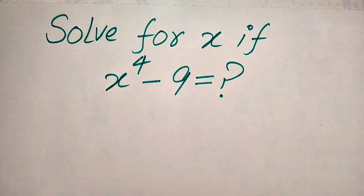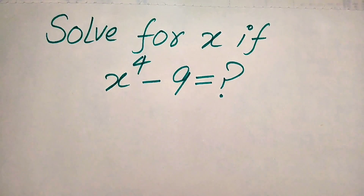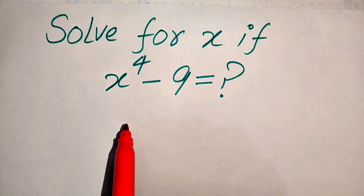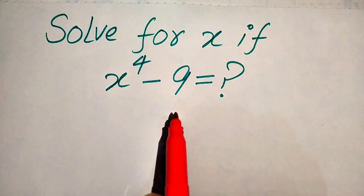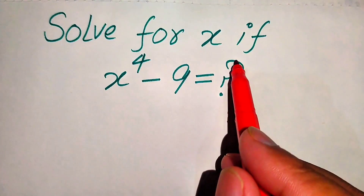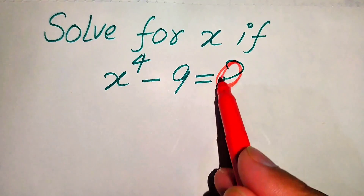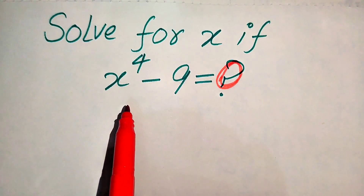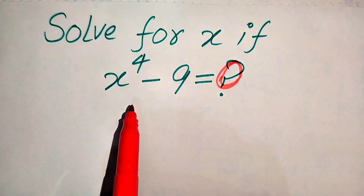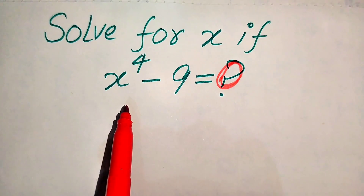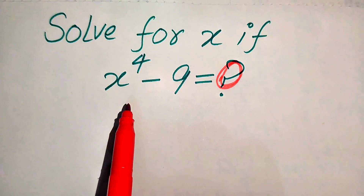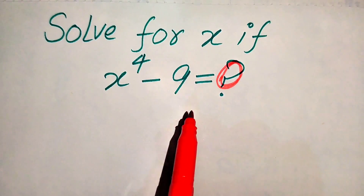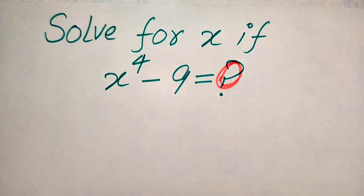Hello everyone, today I want to show you how to solve this problem for the values of x. We have x to the power of 4 minus 9 equals to 0, and we find all the values of x. This is a fourth order equation, which means it has 4 roots, so we find all four roots.